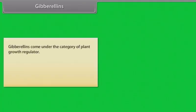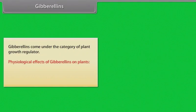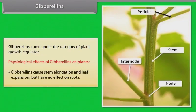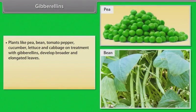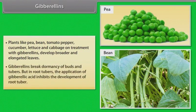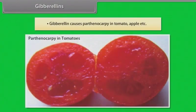Gibberellins come under the category of plant growth regulator. Physiological effects of gibberellins: They cause stem elongation and leaf expansion but have no effect on roots. Gibberellins promote seed germination in lettuce, cereals, etc. Plants like pea, bean, tomato, pepper, cucumber, lettuce and cabbage develop broader and elongated leaves when treated with gibberellins. Gibberellins break dormancy of buds and tubers, but in root tubers, application of gibberellic acid inhibits development of the root tuber. Gibberellins also cause parthenocarpy in tomato, apple, etc.